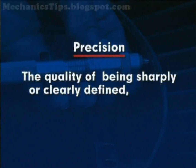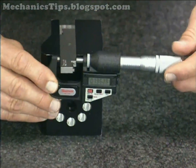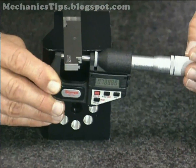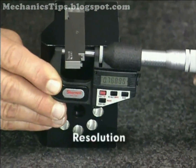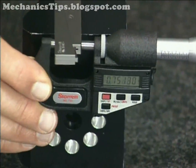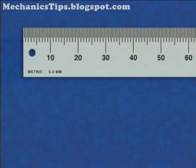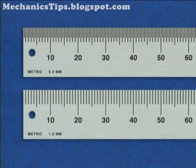Precision is the quality of being sharply or clearly defined, or how closely the indicated value matches the true value. The precision of a measurement device is in part a function of its resolution, which is the smallest graduation into which an instrument is divided. For example, a rule marked in one-half millimeters has a higher resolution and thus can be more precise than a rule marked in millimeters.